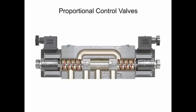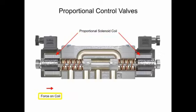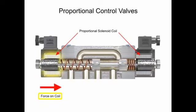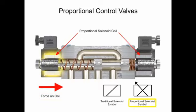Physically, proportional valves appear similar to their on-off solenoid counterparts. The big difference is in the way their solenoid coils perform. Proportional coils operate on DC current and produce varying voltages that in turn produce a variable force to shift the spool.